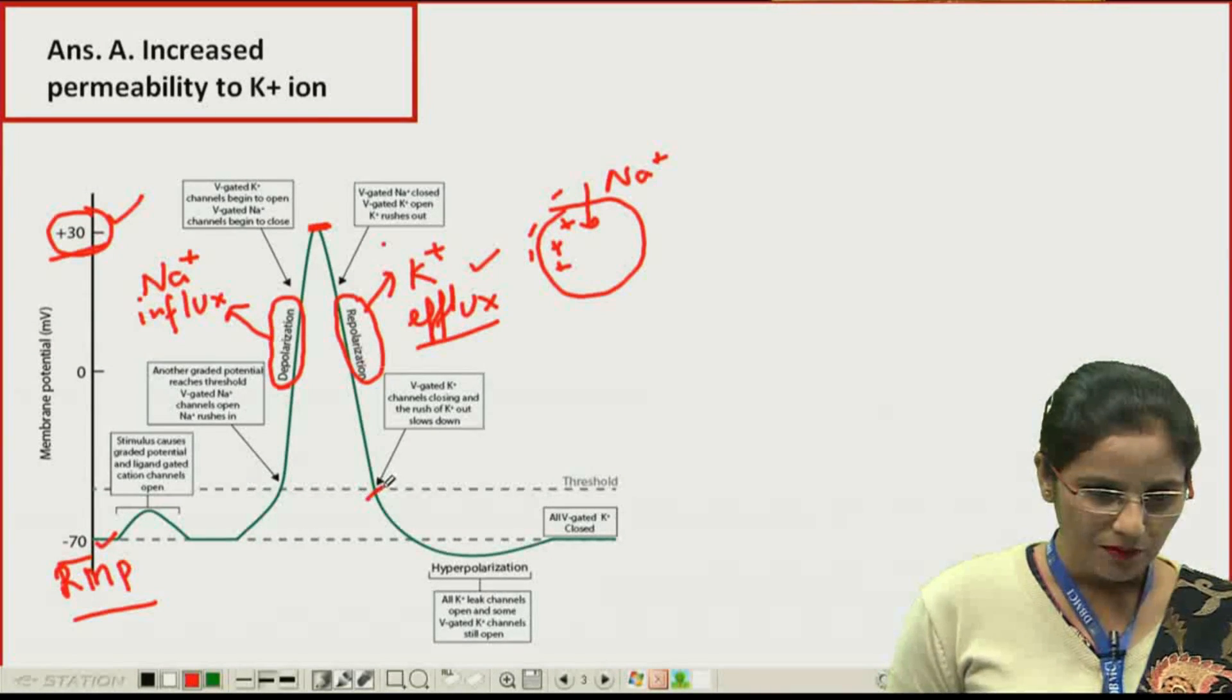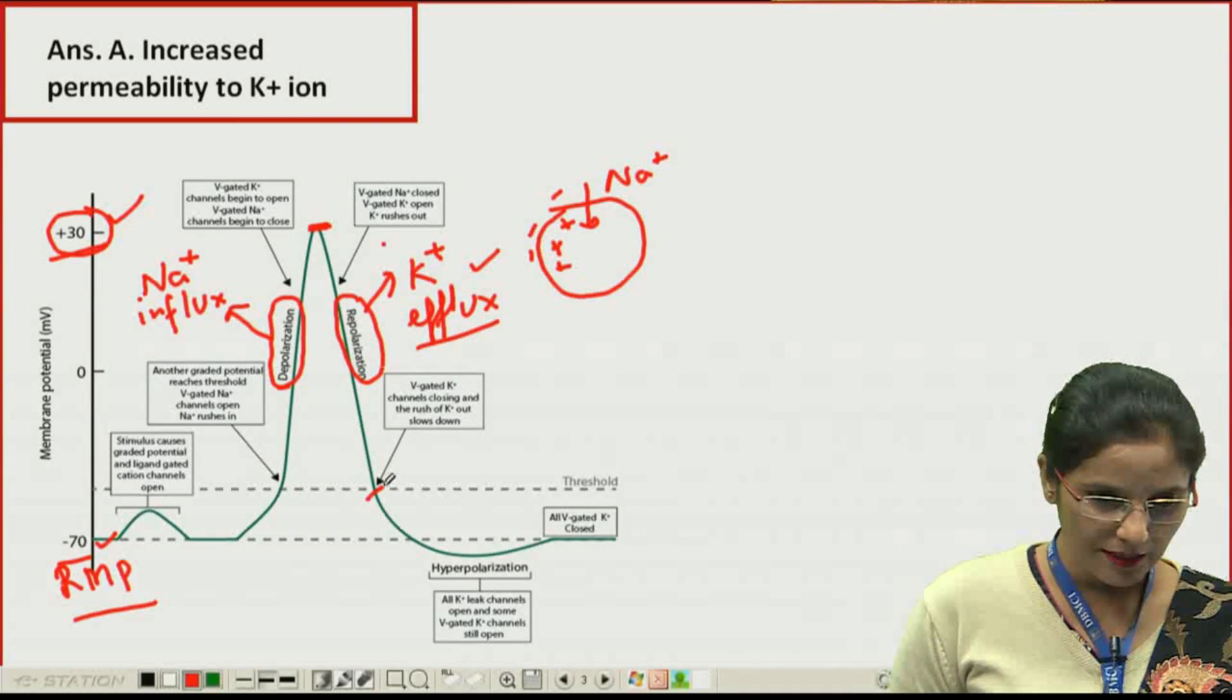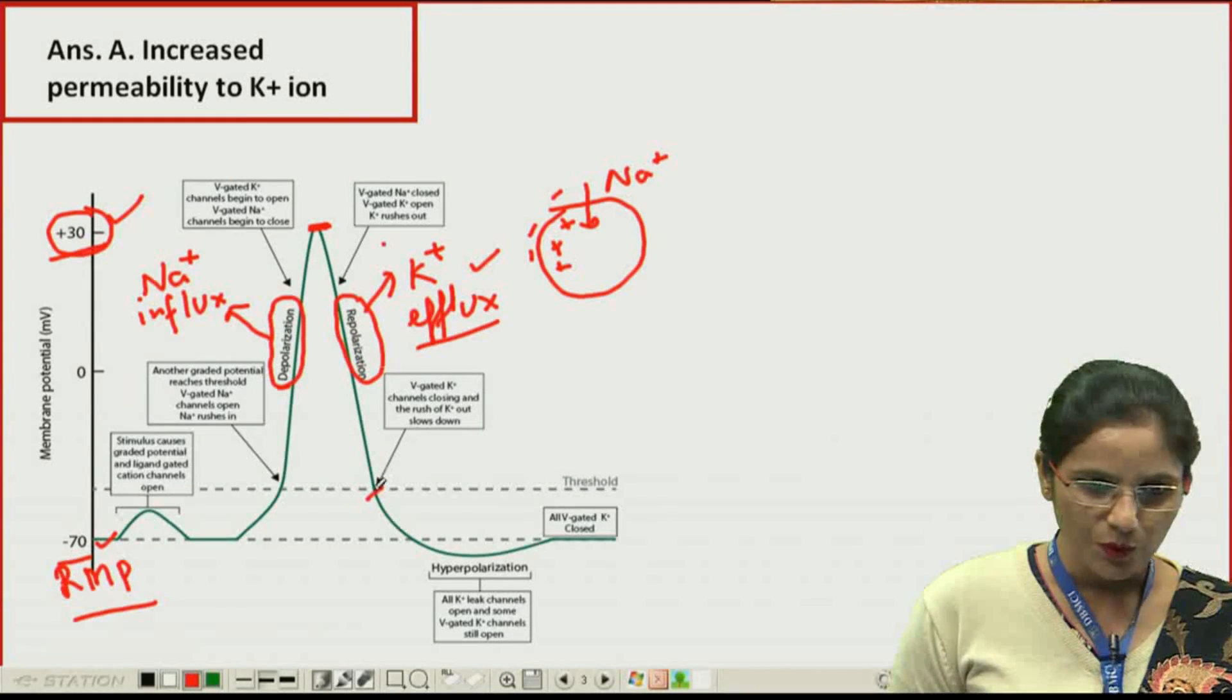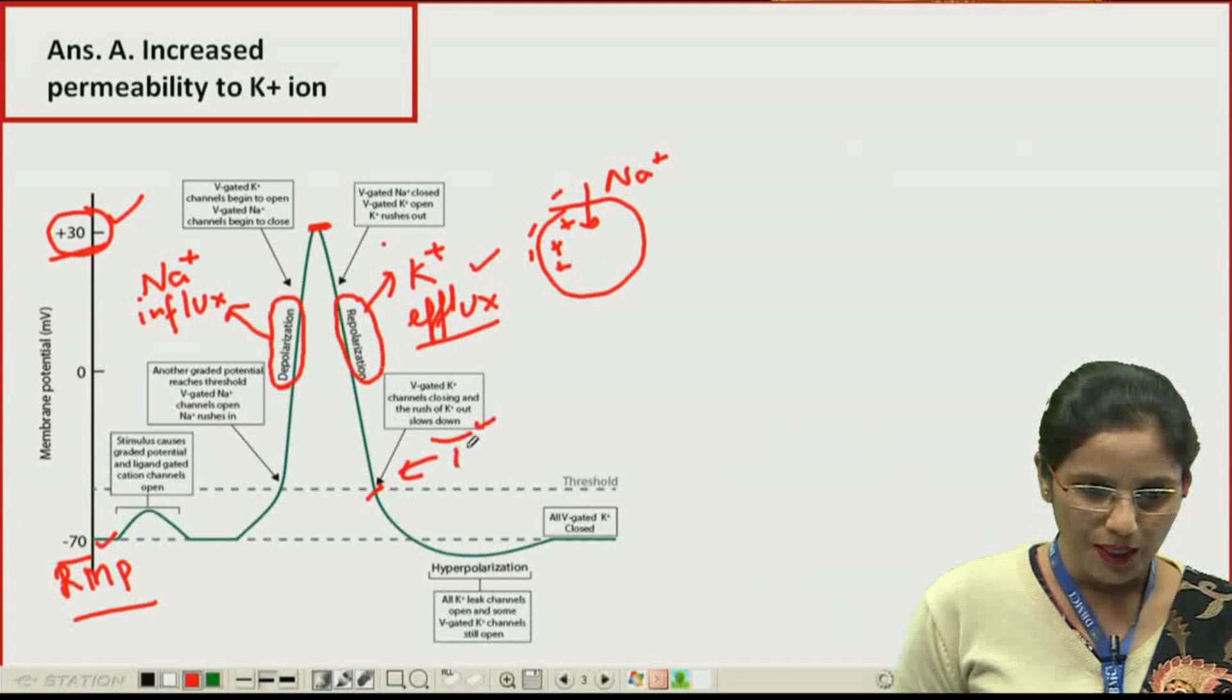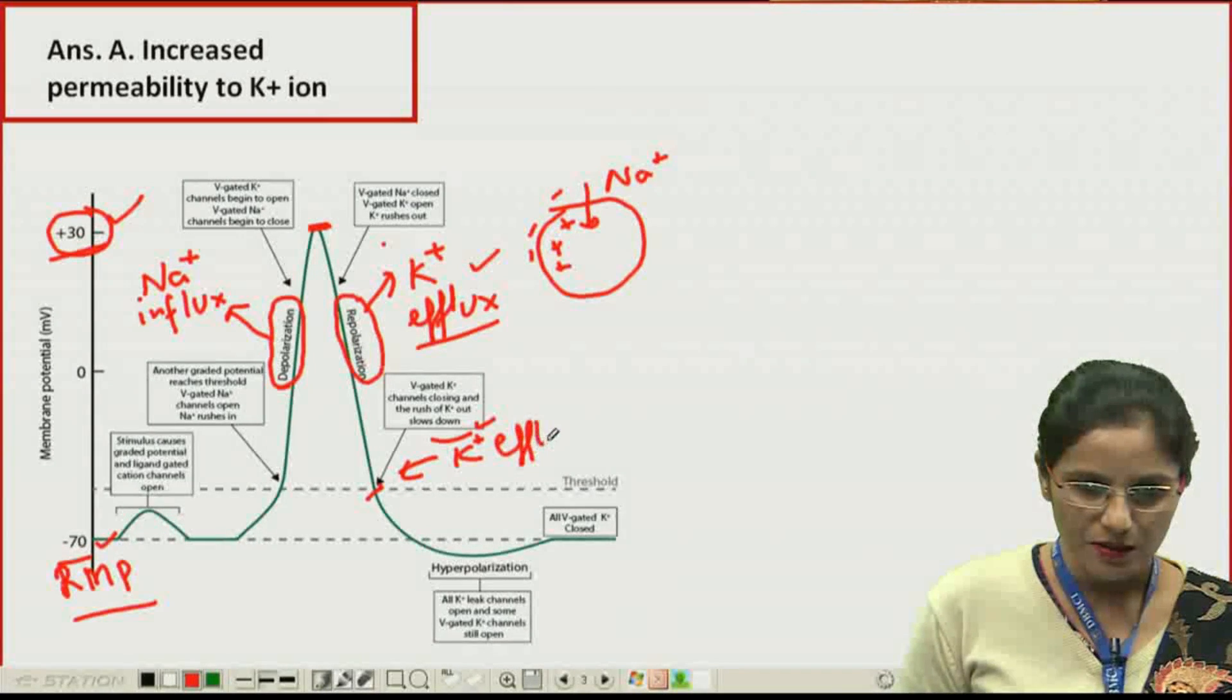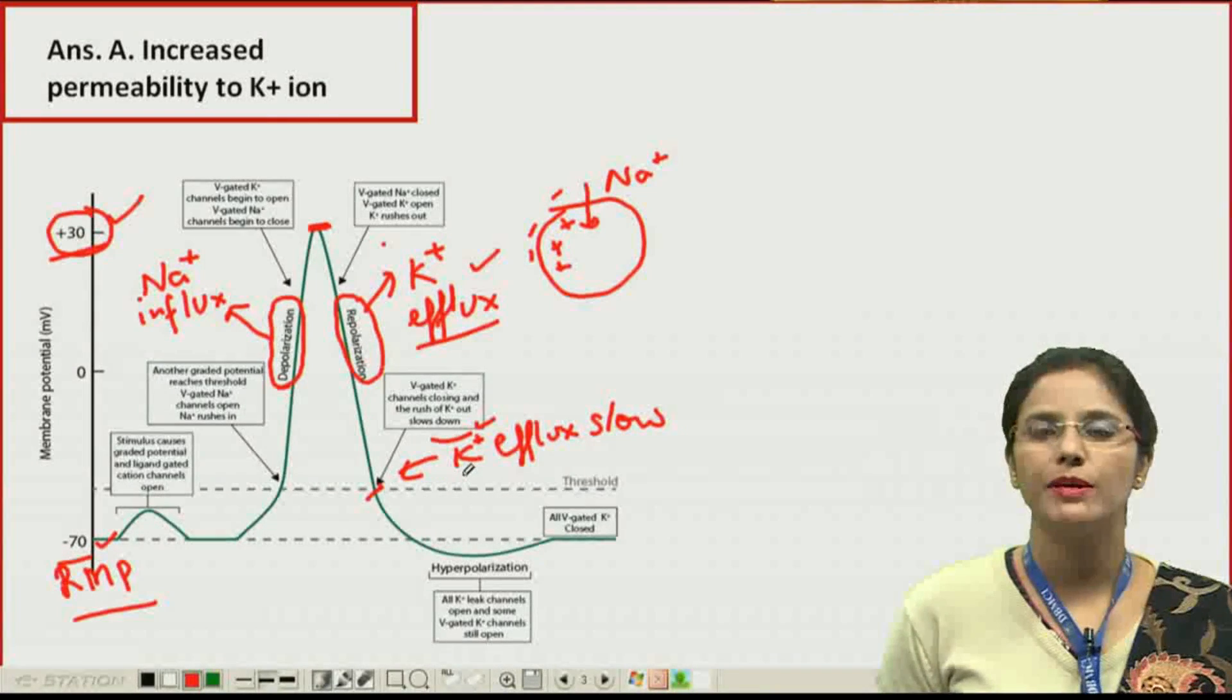Here if you see, the voltage gated channels are closing and the rush of potassium slows down. So from this point, the potassium efflux slows down, or you can see the potassium permeability starts reducing.